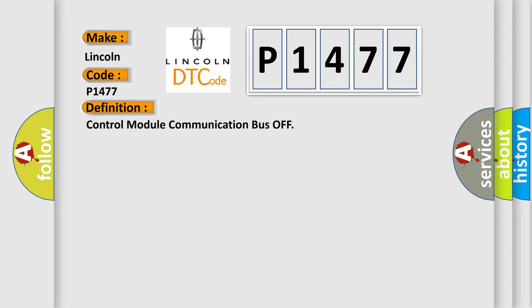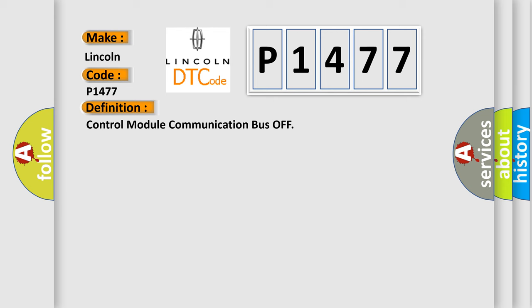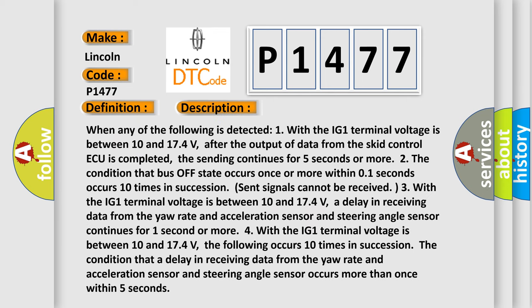And now this is a short description of this DTC code. When any of the following is detected: One, with the IG1 terminal voltage between 10 and 17.4 volts, after the output of data from the SCID control ECU is completed, the sending continues for five seconds or more.